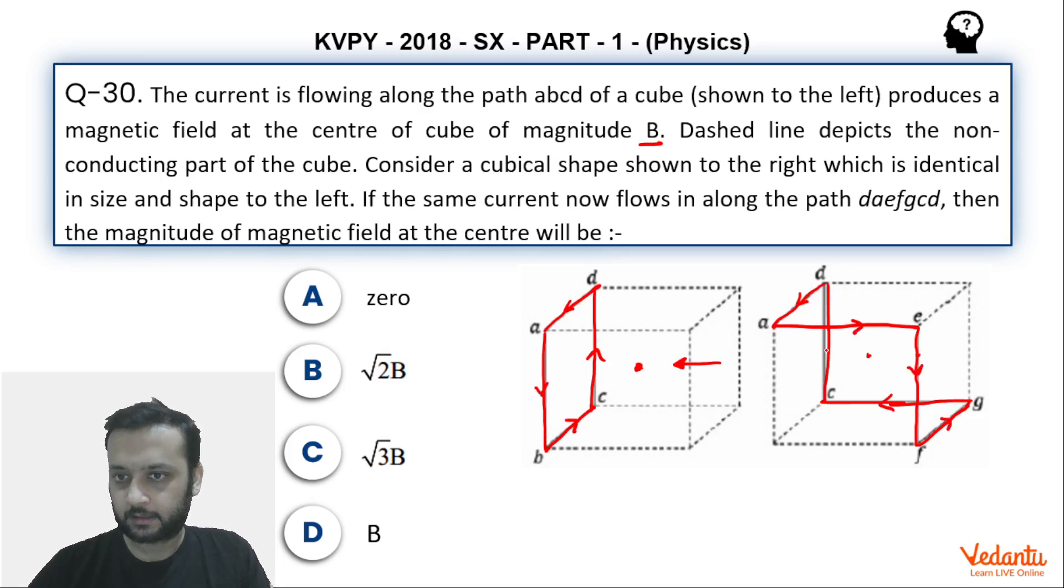So now we have to find the current due to this. We already know that the current due to this square is B at the center. Now what I'm going to do, I'm going to make three squares. So look how am I going to do this. This is one square you can see.